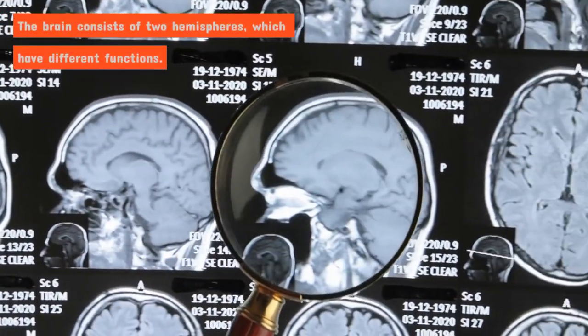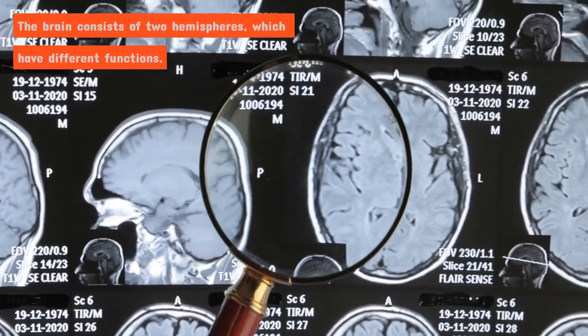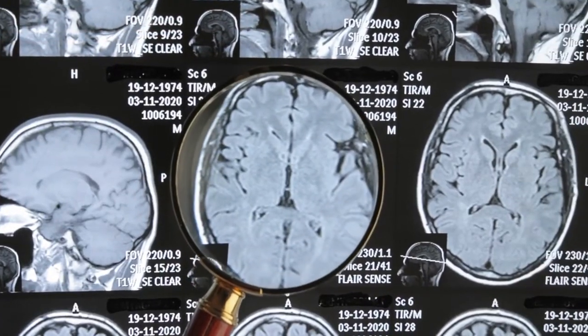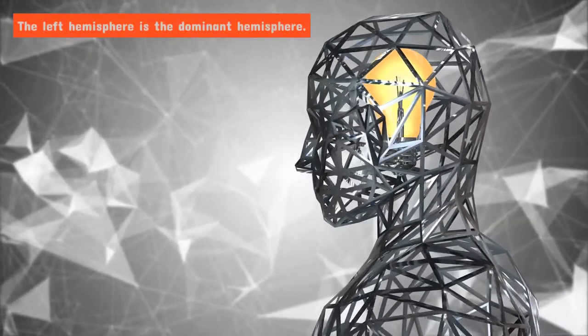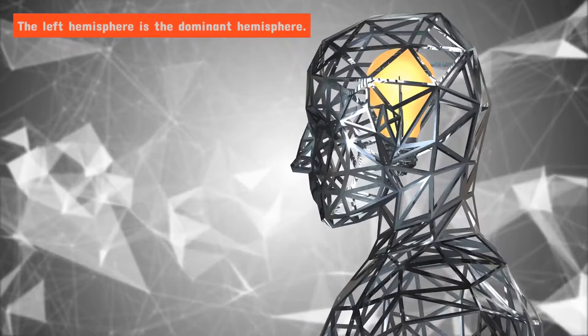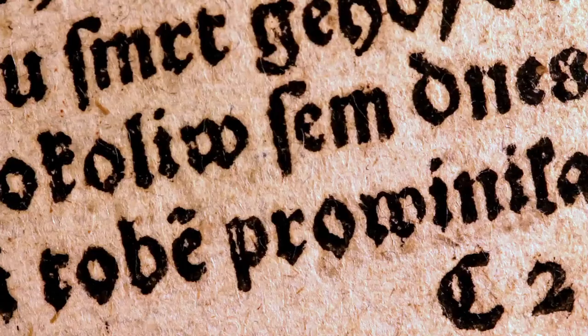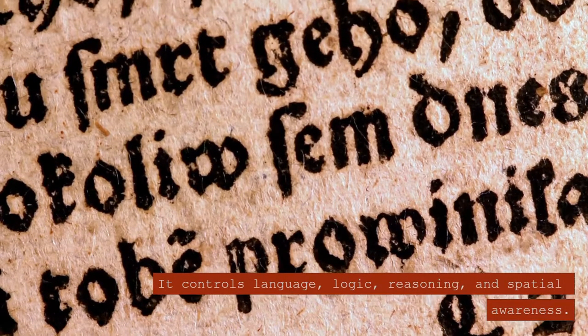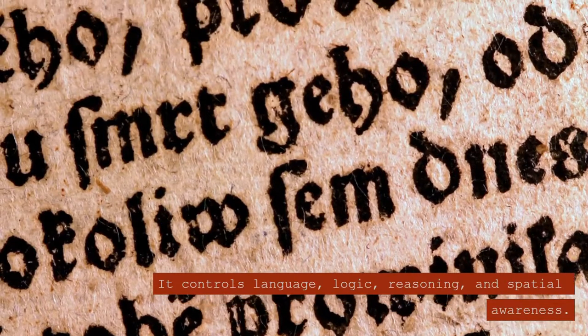The brain consists of two hemispheres which have different functions. The left hemisphere is the dominant hemisphere. It controls language, logic, reasoning, and spatial awareness.